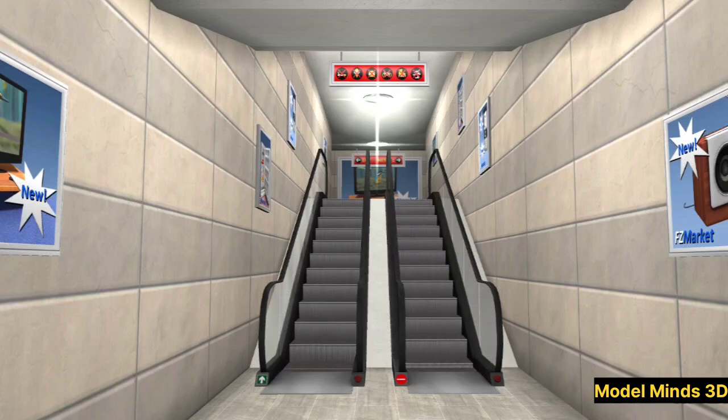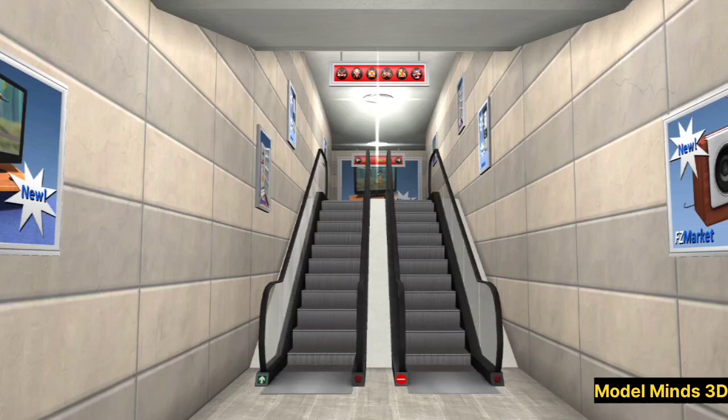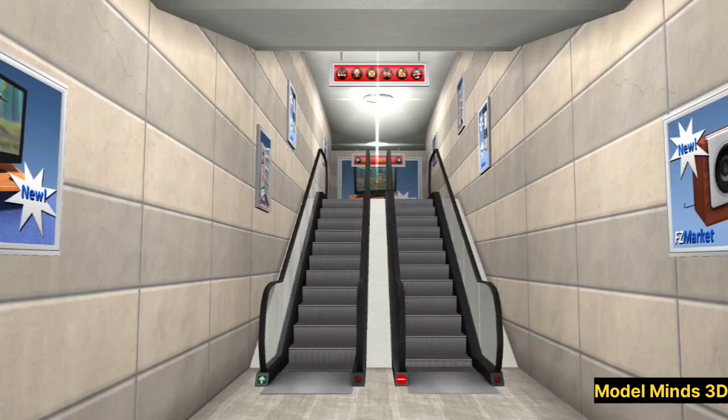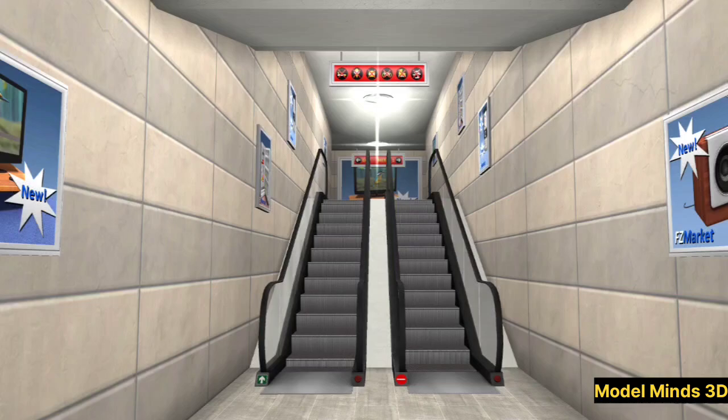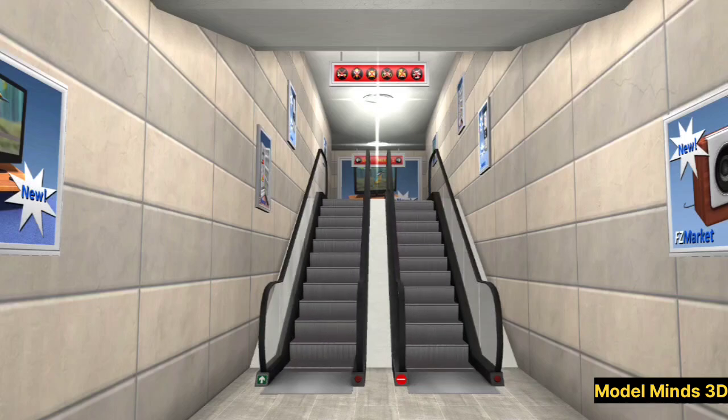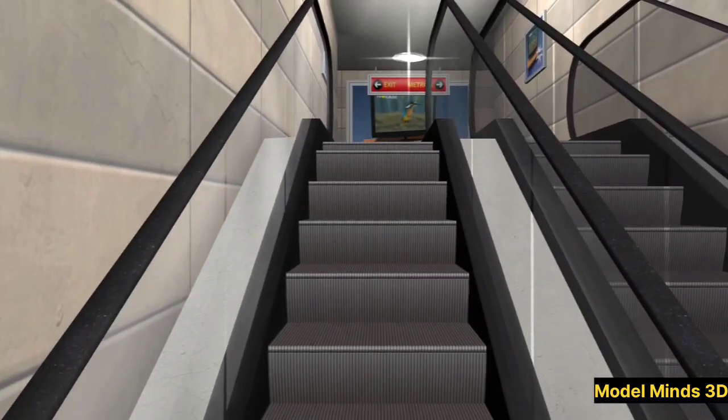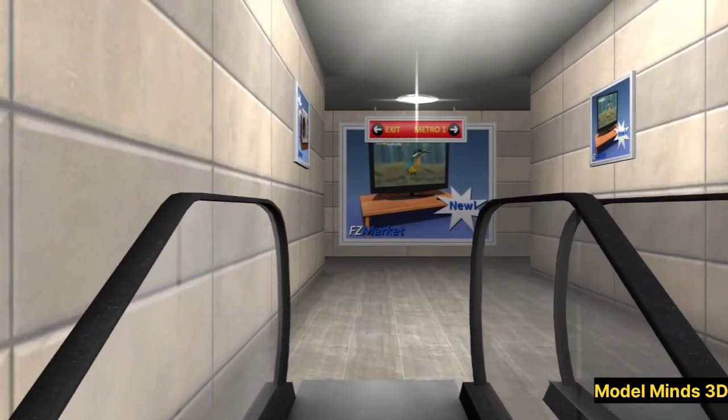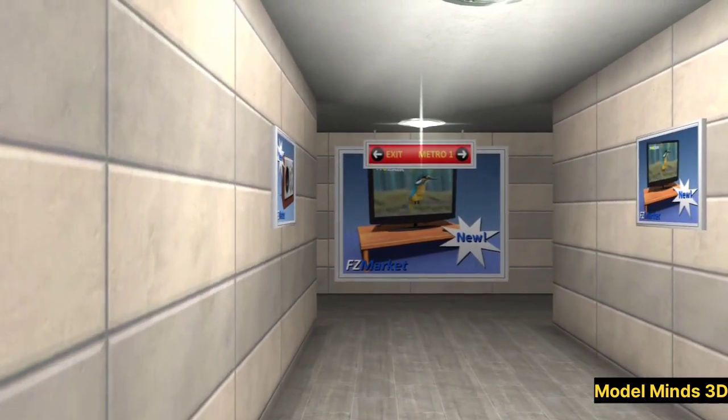What is an escalator? An escalator is a moving staircase designed to transport people vertically or diagonally between floors. Unlike elevators which move people in a confined space, escalators allow for continuous movement, making them perfect for high traffic areas like malls, airports, metro stations, and department stores.